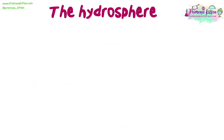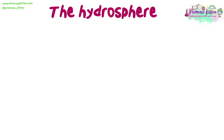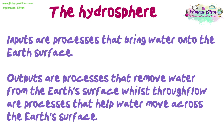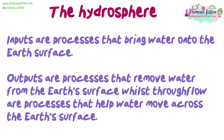Another possible exam question regarding the hydrosphere is to organise the processes into inputs, outputs and throughflow. Inputs are processes that bring water onto the earth's surface. Outputs are processes that remove water from the earth's surface, whilst throughflow are processes that help water move across the earth's surface. And here are some examples of these.